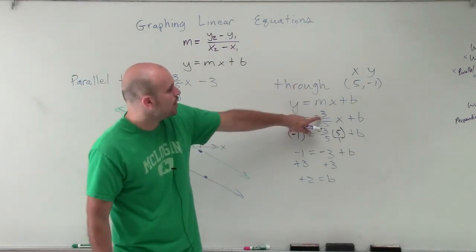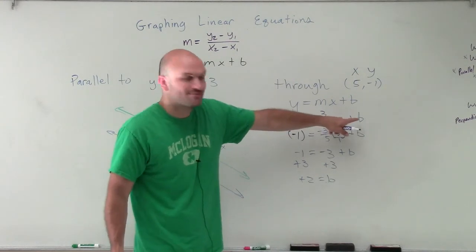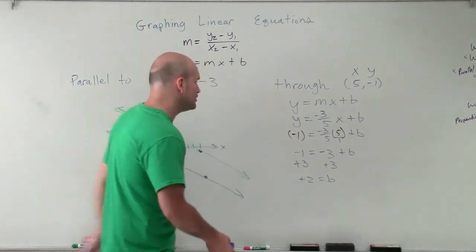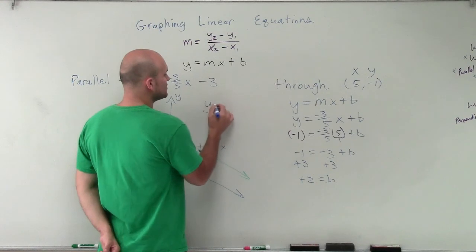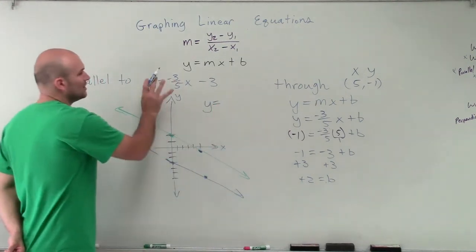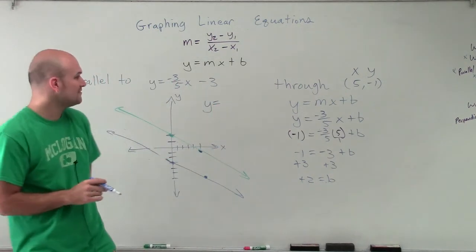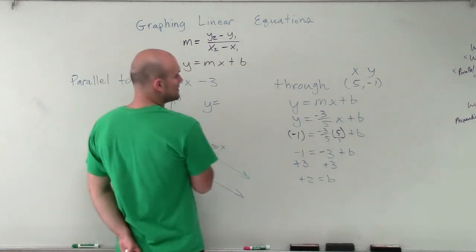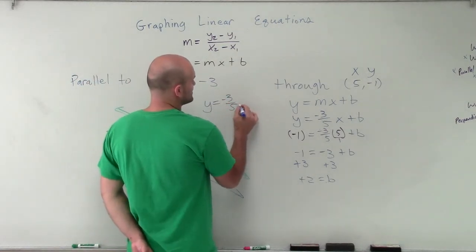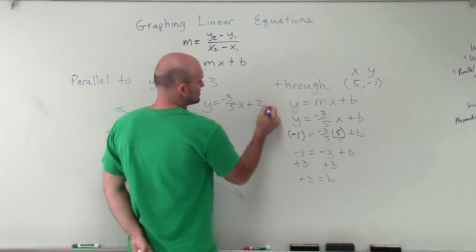So if I know the slope is negative 3 fifths and the y-intercept is 2, I can now write an equation for this. So my new equation on my line that's going to be parallel to the line y equals negative 3 fifths x minus 3 is going to be y equals negative 3 fifths x plus 2.